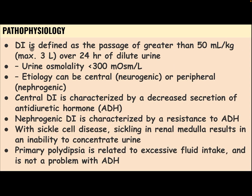Diabetes insipidus is defined as the passage of greater than 50 ml per kg, maximum 3 liters, over 24 hours of diluted urine. Urine osmolality is less than 300 mOsm per liter. Etiology can be central (neurogenic) or peripheral (nephrogenic).